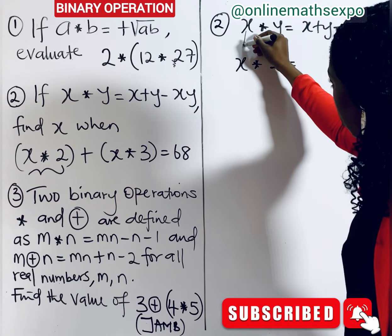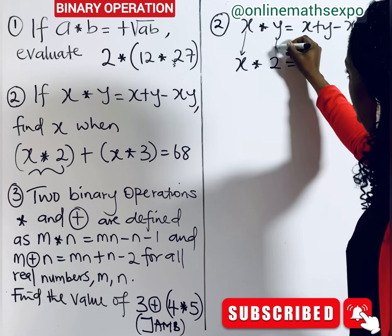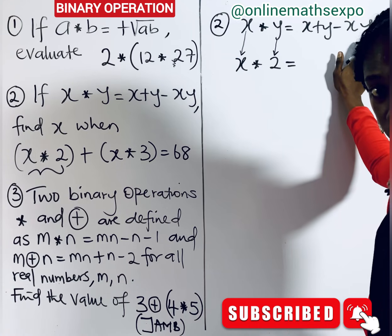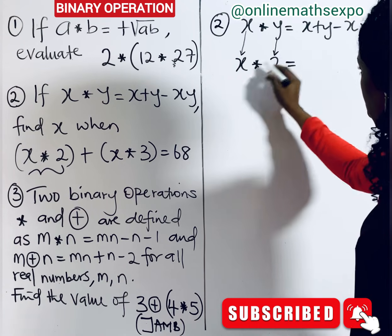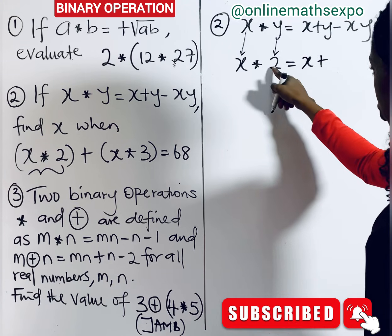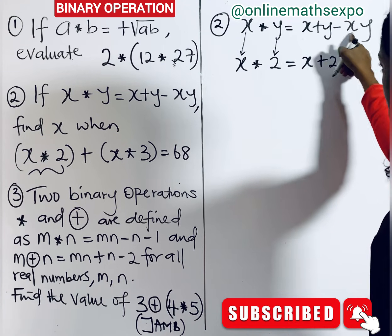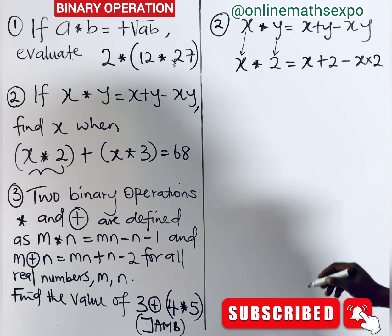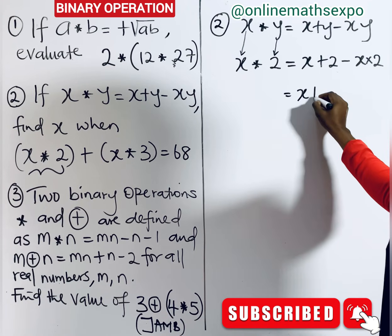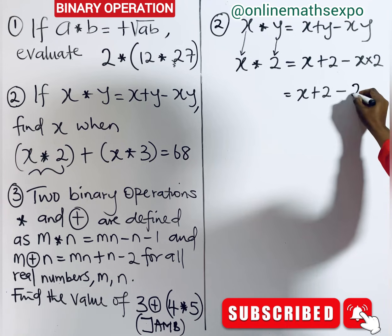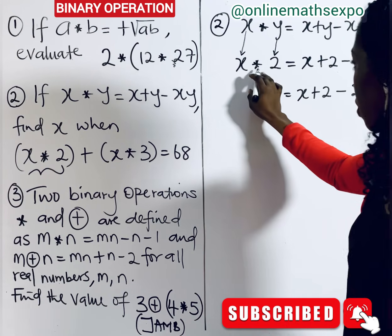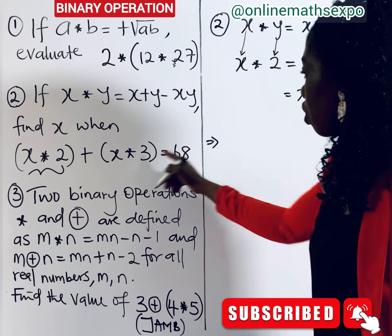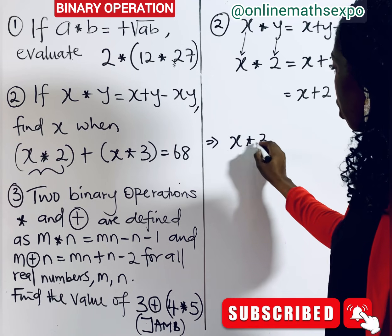Let's work with x ∗ 2 first. Your x remains x, and your y takes the value of 2. Substituting into the defined operation: x ∗ 2 = x + 2 − x×2 = x + 2 − 2x. Now let's take x ∗ 3. Using the same definition: x ∗ 3 = x + 3 − x×3 = x + 3 − 3x.